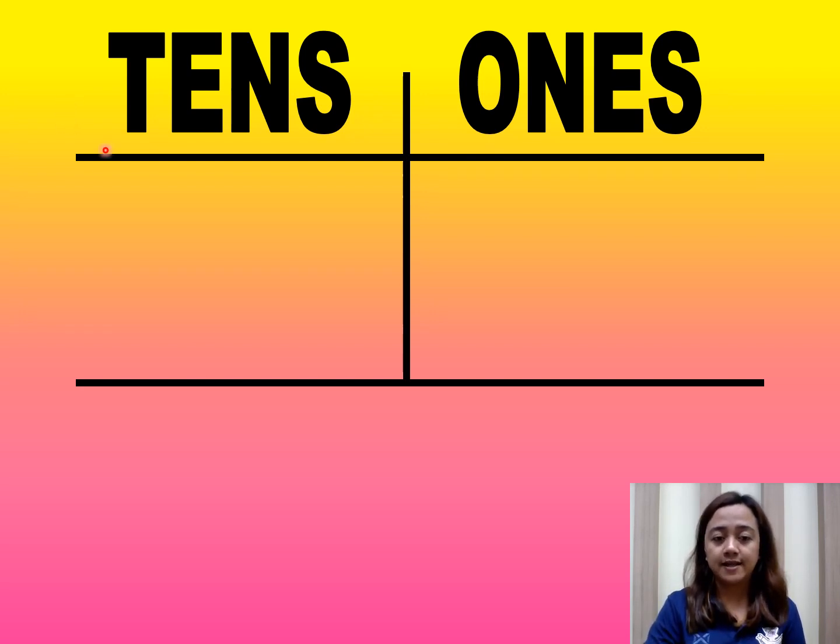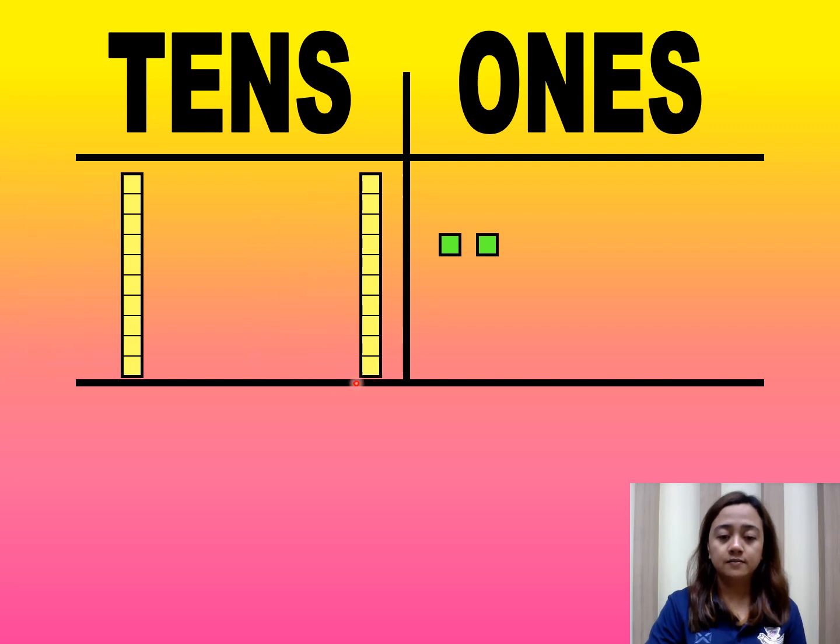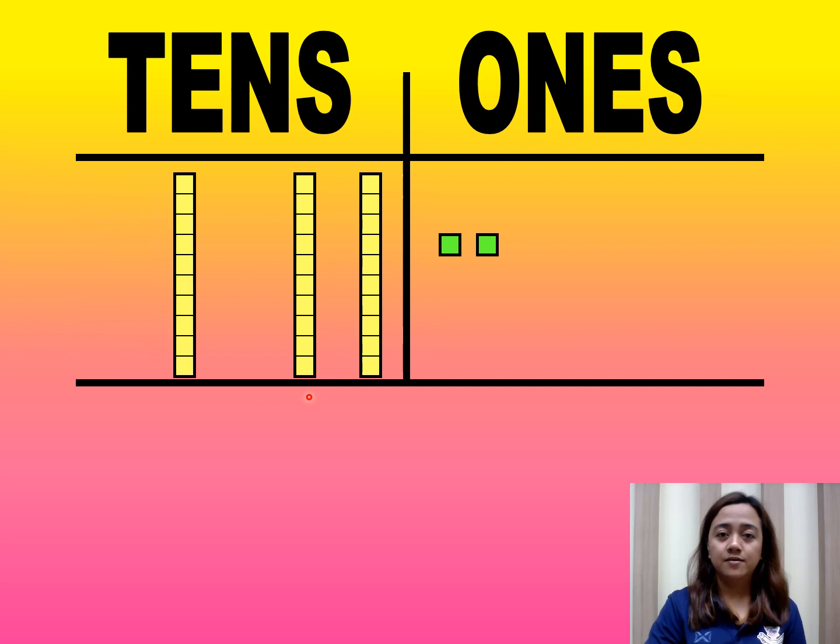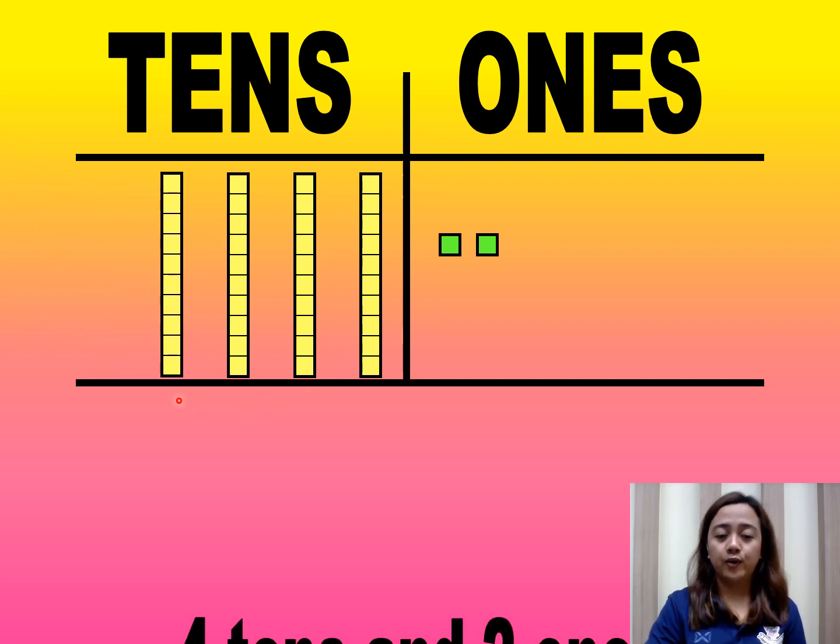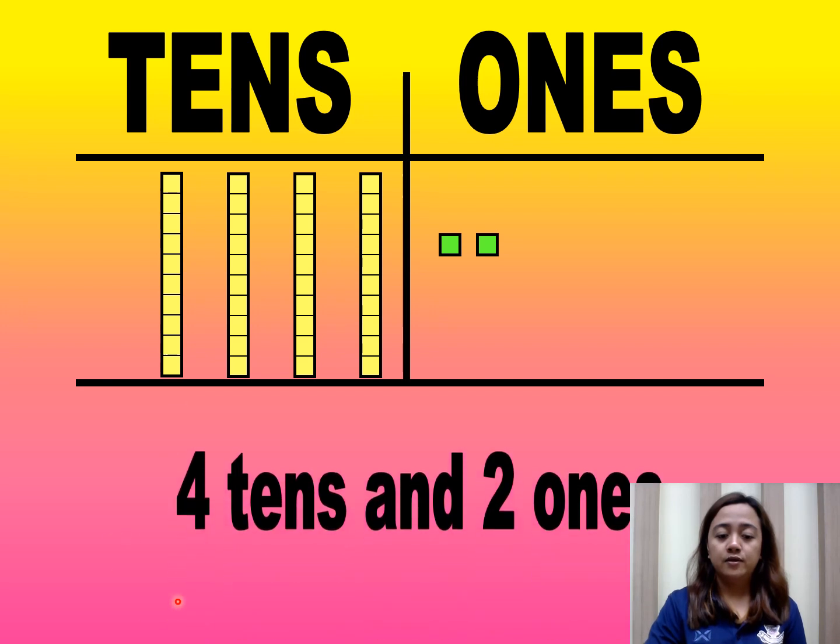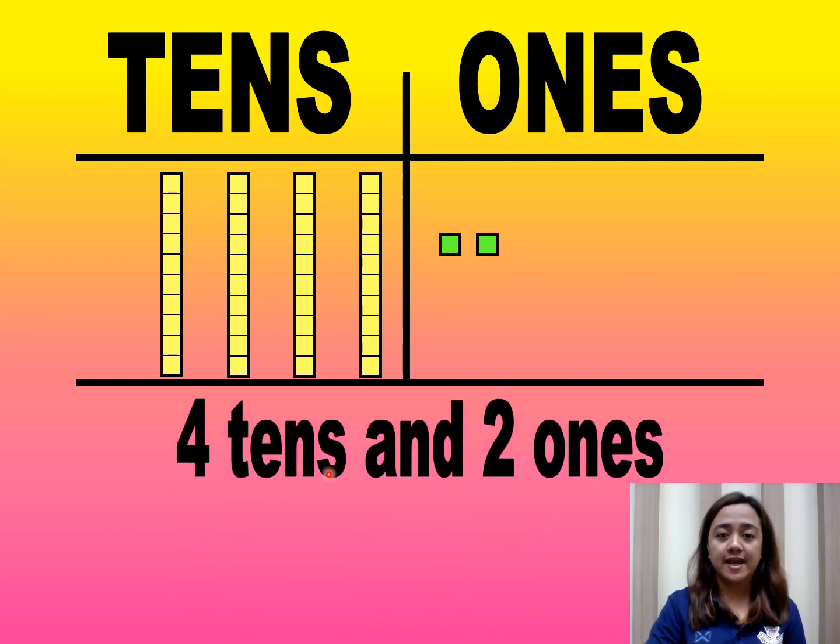Here we have tens and ones. So in ones, one, two. Tens, one, two, three, four. So we have here four tens and two ones.